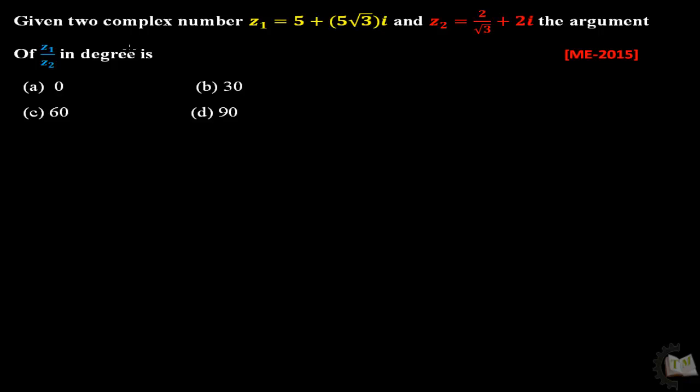The question is: given two complex numbers Z1 which equals 5 plus 5 times square root of 3i, and Z2 which equals 2 divided by square root of 3 plus 2i, the argument of Z1 divided by Z2 in degrees is. There are four options and you have to find out one of these.